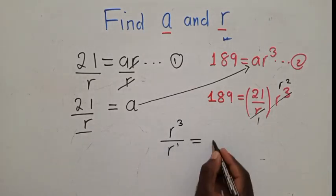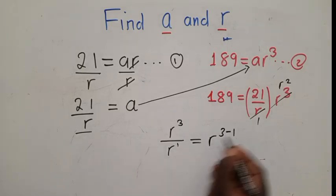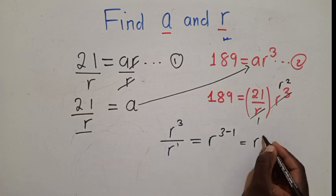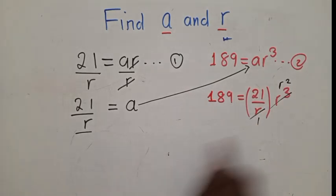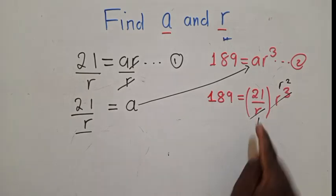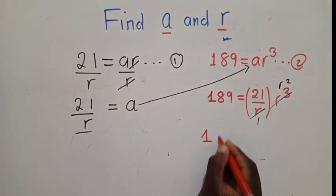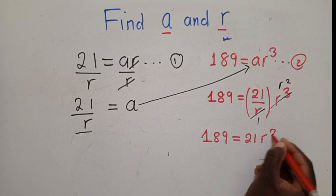So in case you don't know how to divide these using the laws of indices, when you've got the same basis, we know that on top there is power 3, down here there is r to the power 1. So when dividing, you just write r and then you subtract the powers. Power 3 minus 1 gives us r to the power 2. So this would simply be 189 equals 21r to the power 2.